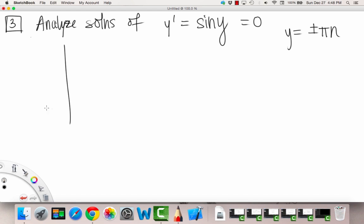So let's look at the y' versus y graph. So let's do 1, 2, 3. We'll go negative 3 pi, negative 2 pi, negative pi. This is zero.